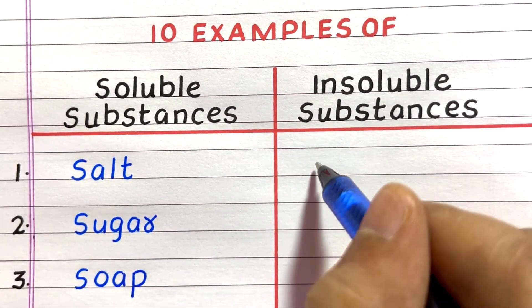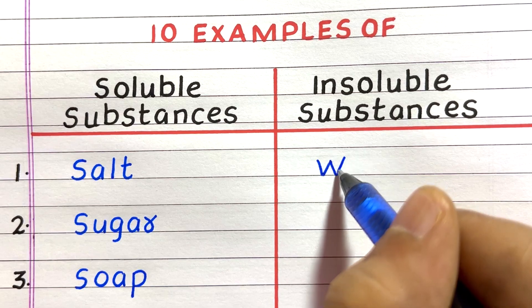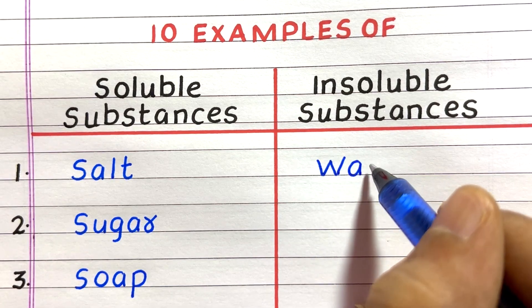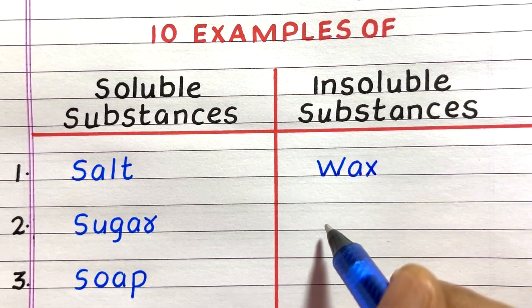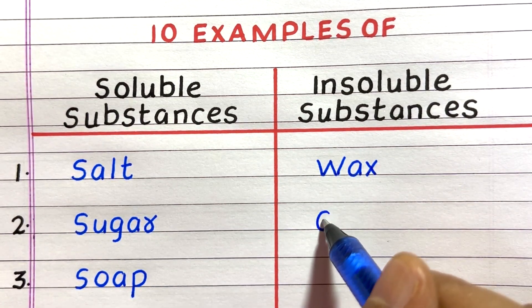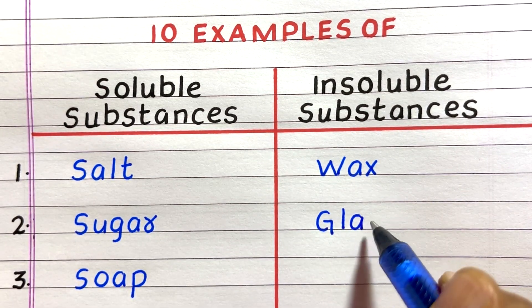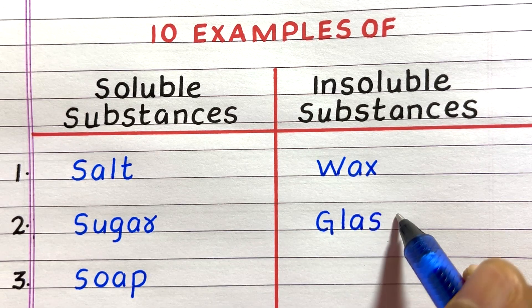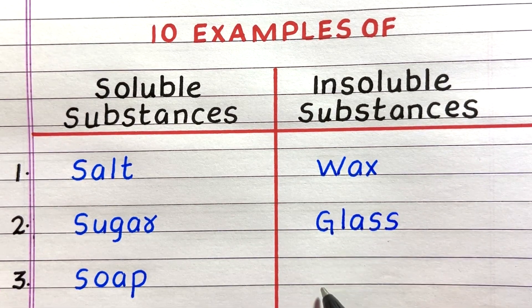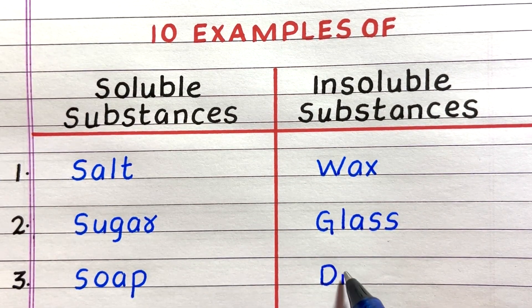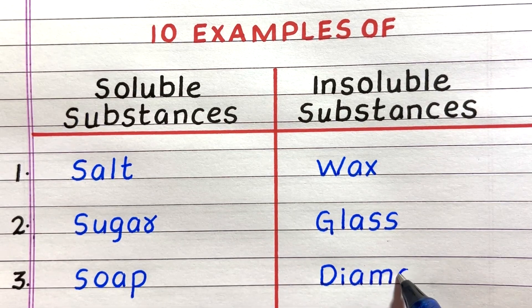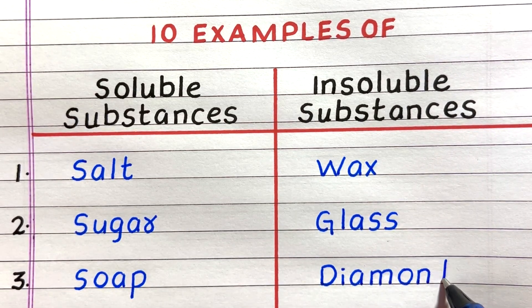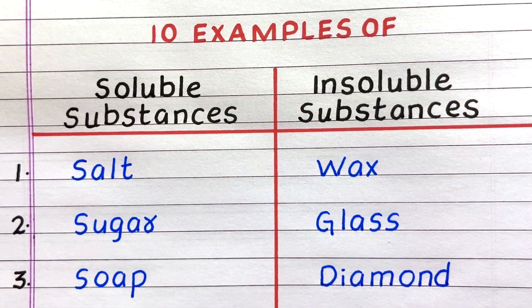First example of an insoluble substance is wax. Second, glass. Third, diamond.